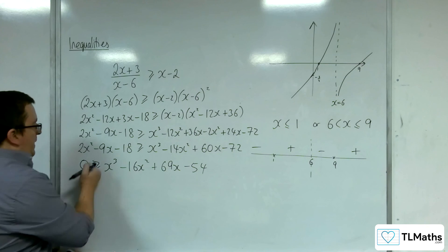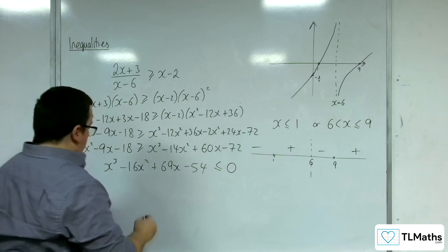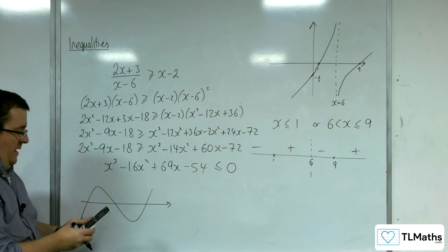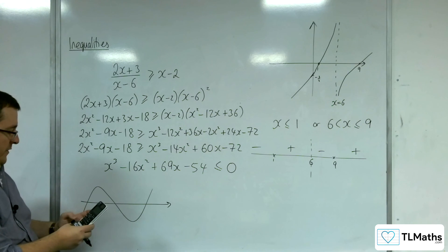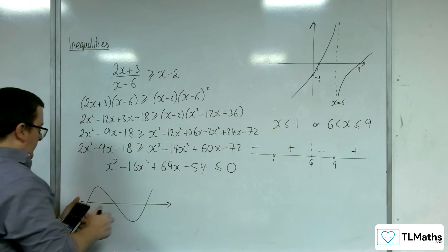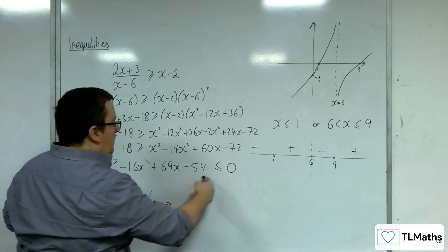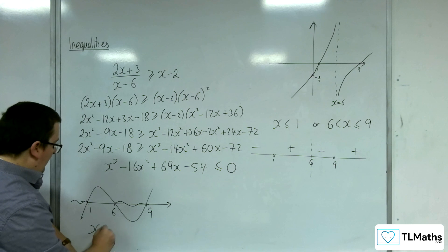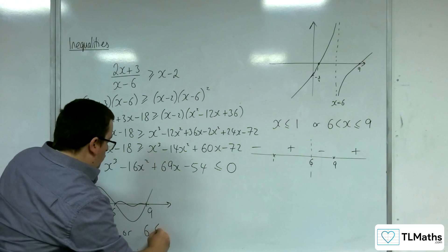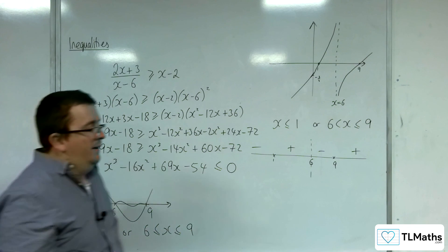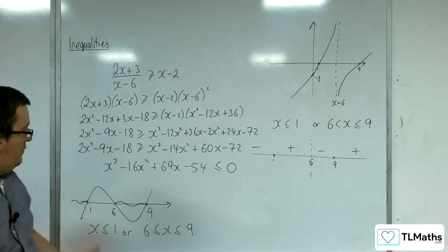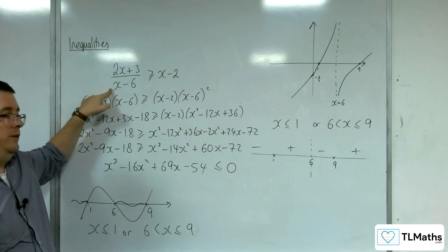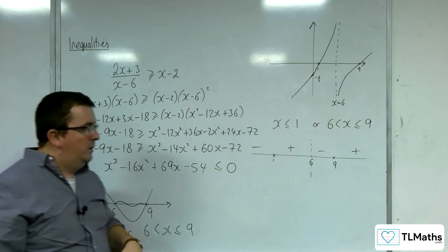So we need to solve the cubic inequality x³ - 16x² + 69x - 54 ≤ 0. Using a cubic solver with coefficients 1, -16, 69, -54, the roots are x = 1, x = 6, and x = 9. Reading from the cubic where it's less than or equal to 0: x ≤ 1 or 6 ≤ x ≤ 9. However, as we've seen before, the algebraic route makes it very easy to miss that x = 6 cannot be included, because in the original problem x = 6 makes the denominator undefined. Always double-check back to the original problem.